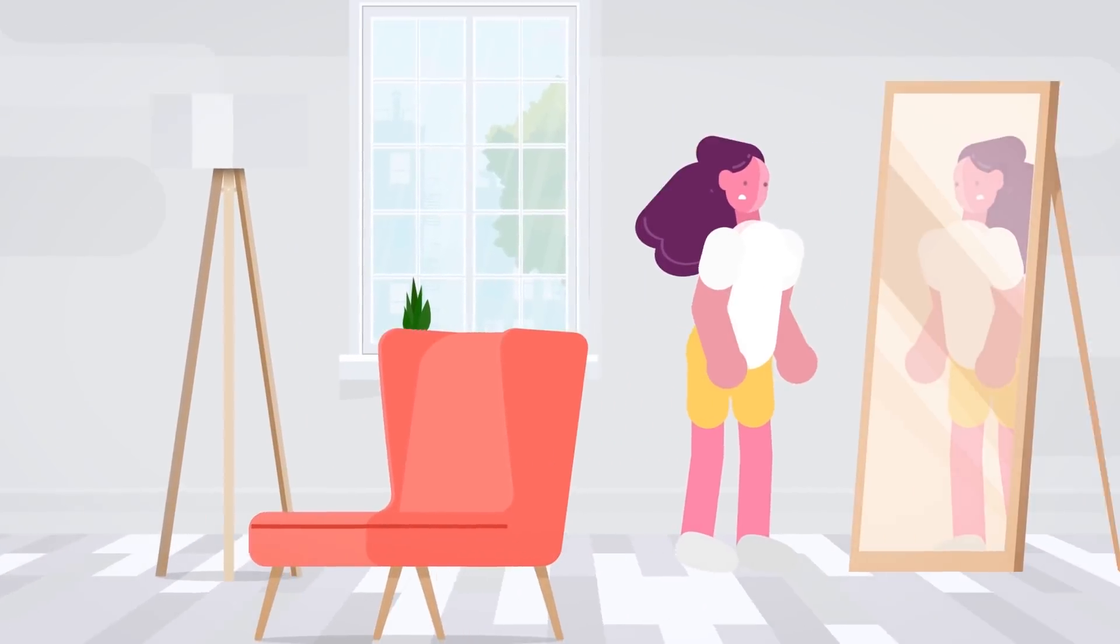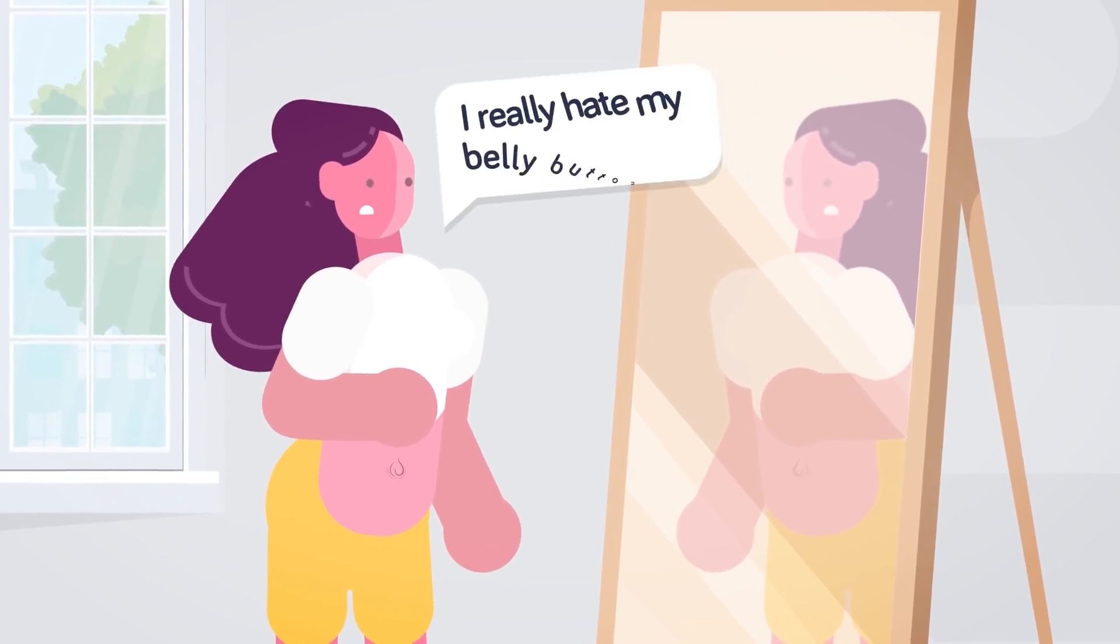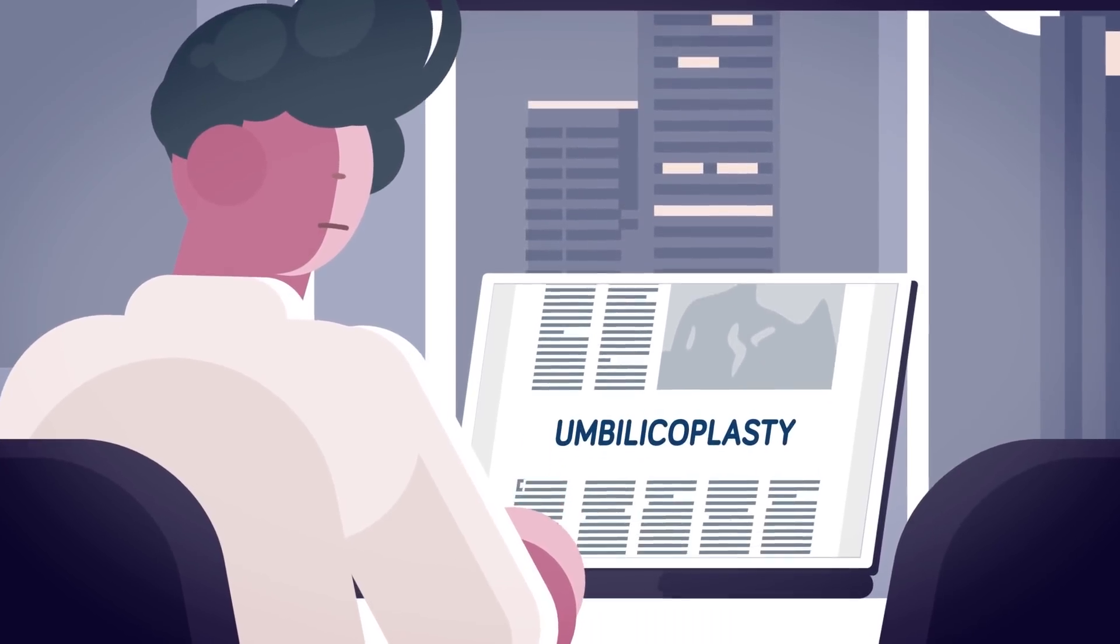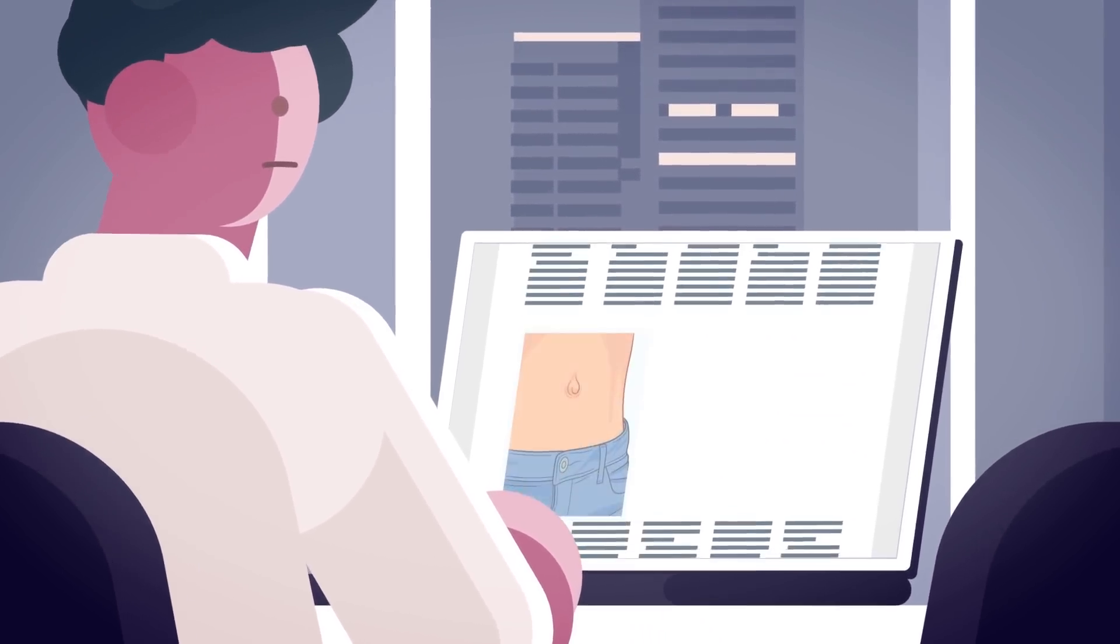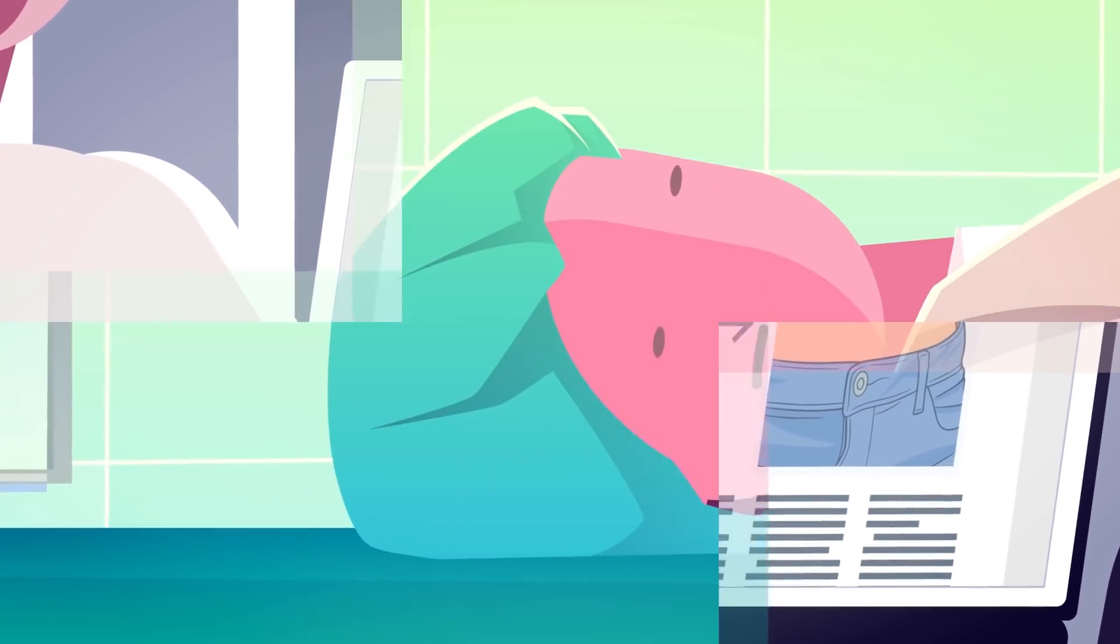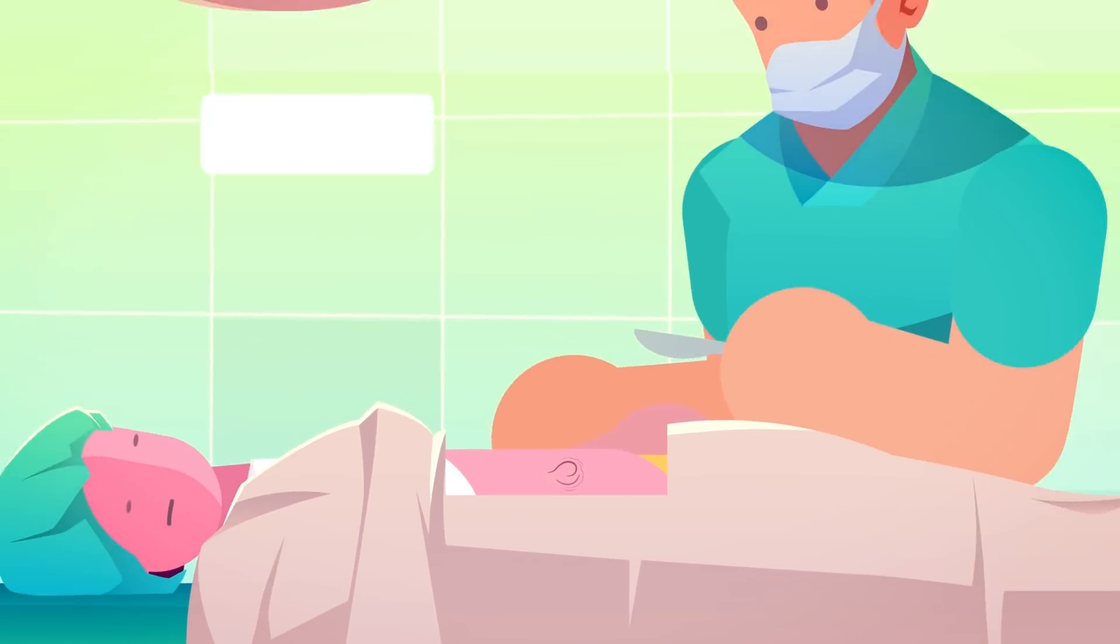So what if someone really hates their belly button? Is there anything they can do to reshape it? Well, as a matter of fact, there is. Umbilicoplasty is the type of surgery that can turn a less common outie belly button into the more common and arguably more desirable innie. Anyone willing to fork over two grand for the 45 minute procedure can finally have the belly button of their dreams.